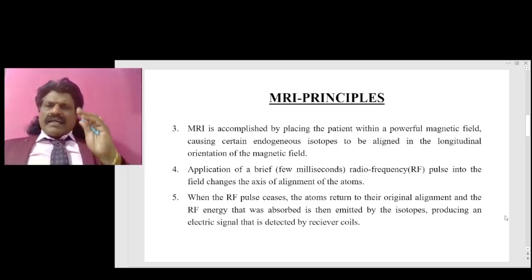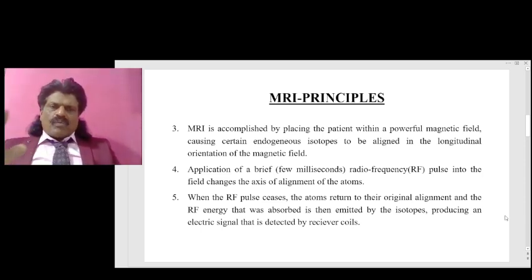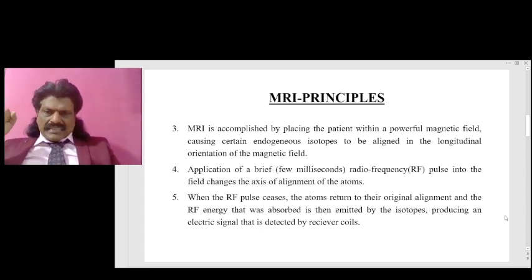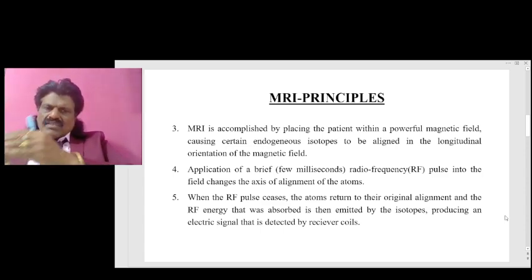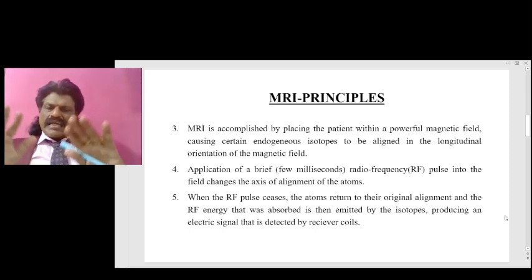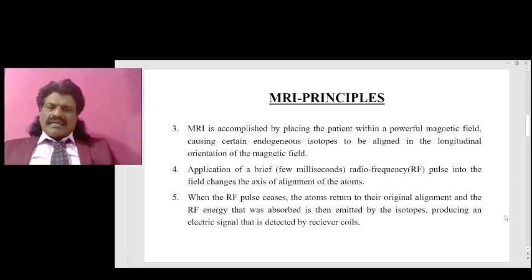Application of a brief radio frequency pulse — lasting a few milliseconds — into the field changes the axis of alignment of atoms. When the RF pulse ceases, the atoms return to their original alignment, and the RF energy that was absorbed is then emitted by the isotopes, producing an electric signal detected by the receiver coils.